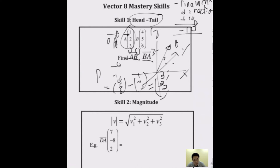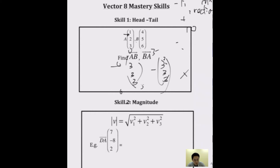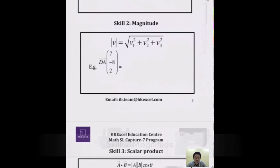Vector BA is the opposite direction. Since AB = (3, 3, 3), BA = (−3, −3, −3). You can also use head minus tail: A − B = (1, 2, 3) − (4, 5, 6) = (−3, −3, −3). Same result.